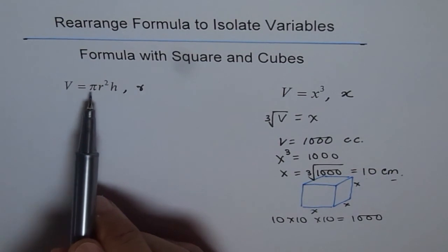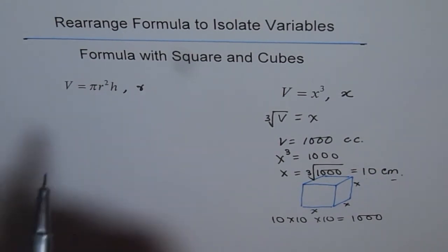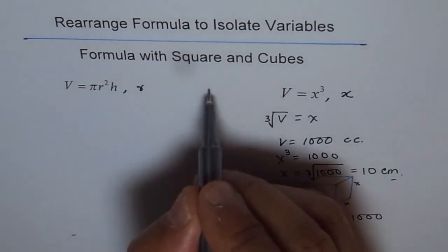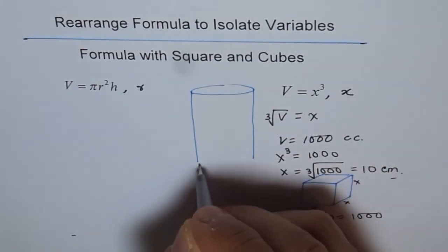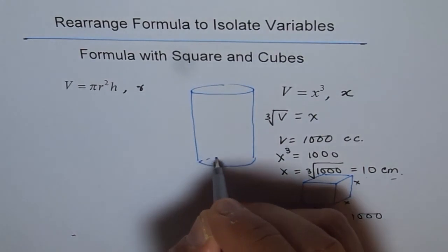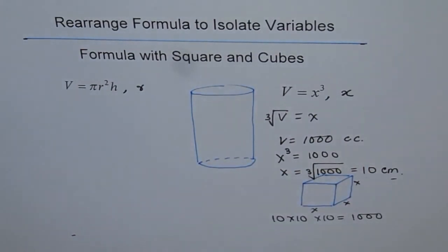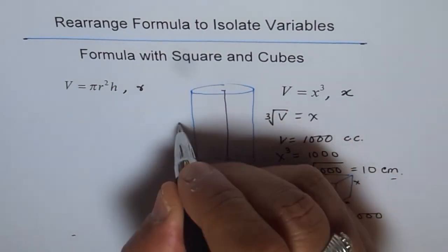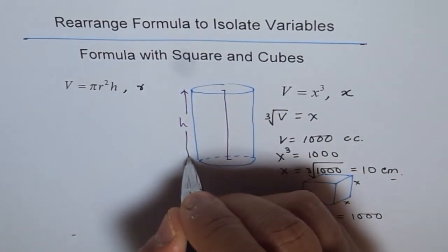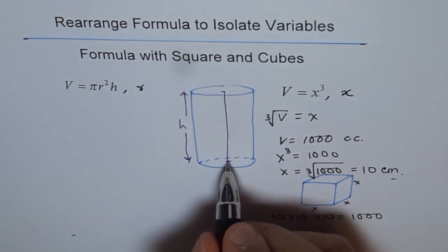Now let's look into the other formula. It is volume equals to pi r square h. This is actually volume of a cylinder. So let's say we have a cylinder here whose height is h. That means from here to here, the height of the cylinder is h. From here to here, okay?